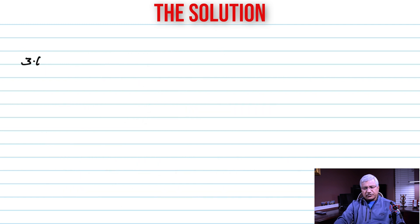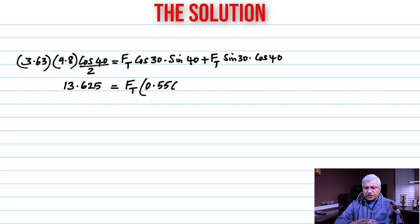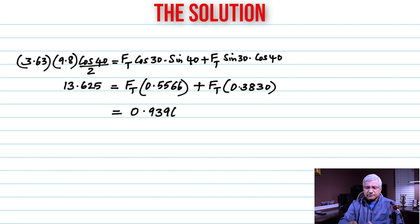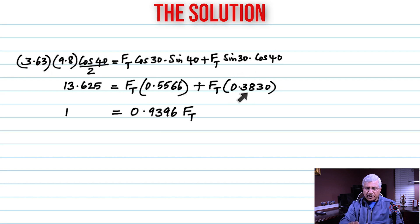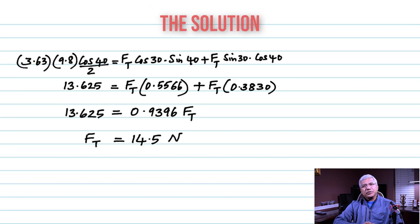Plugging in the values carefully, the left side gives 13.625. On the right side, cosine 30° × sine 40° plus sine 30° × cosine 40° — these two numbers add up to 0.9396 (FT is common). Therefore FT = 13.625 / 0.9396 = 14.5 newtons. That's how you do this problem.